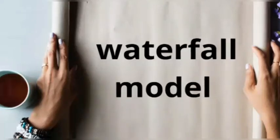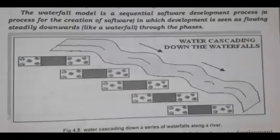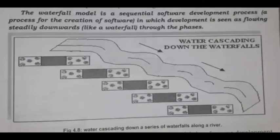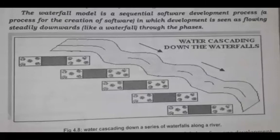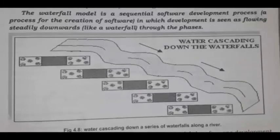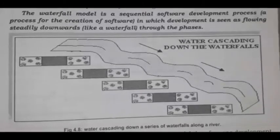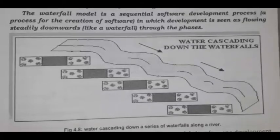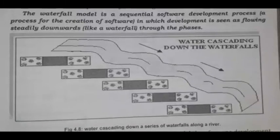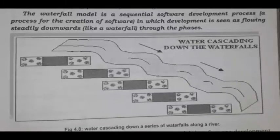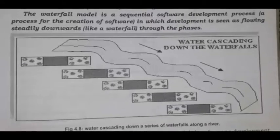Its main definition is the waterfall model is a sequential software development process in which the development is seen as flowing steadily downwards through the phases. So these are the phases down and you can see in the diagram. Basically, as the flow of control is from top to down, its name is waterfall model.